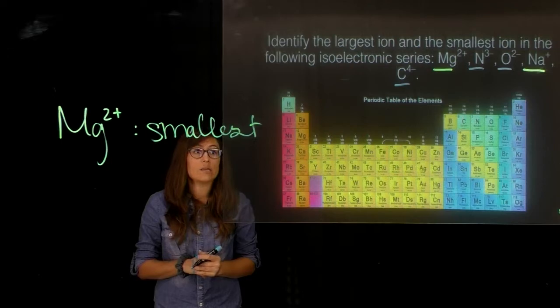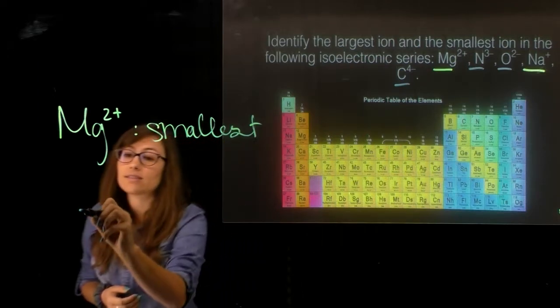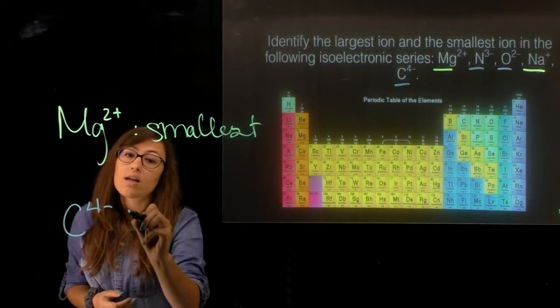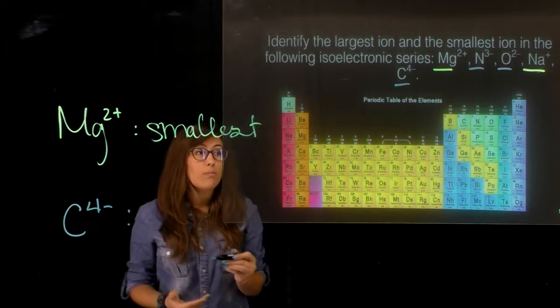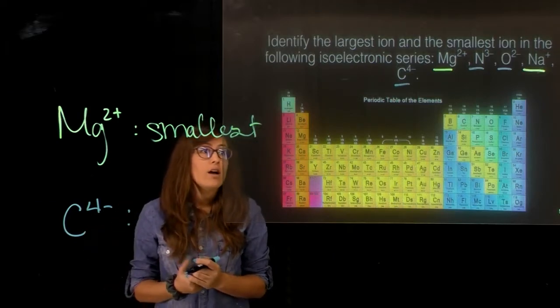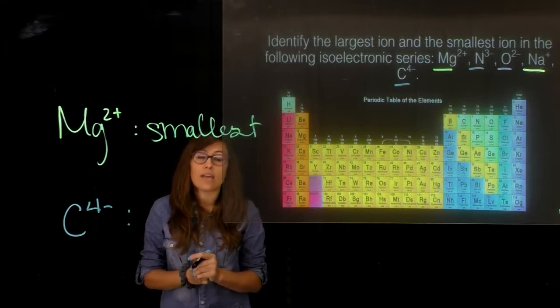We're going to identify the one that's accepting the most electrons, and in this case it's C4 minus. This is going to result in the larger radius. It's going to have the most electron electron repulsion. It's also going to have the least number of protons in ratio to that of electrons.